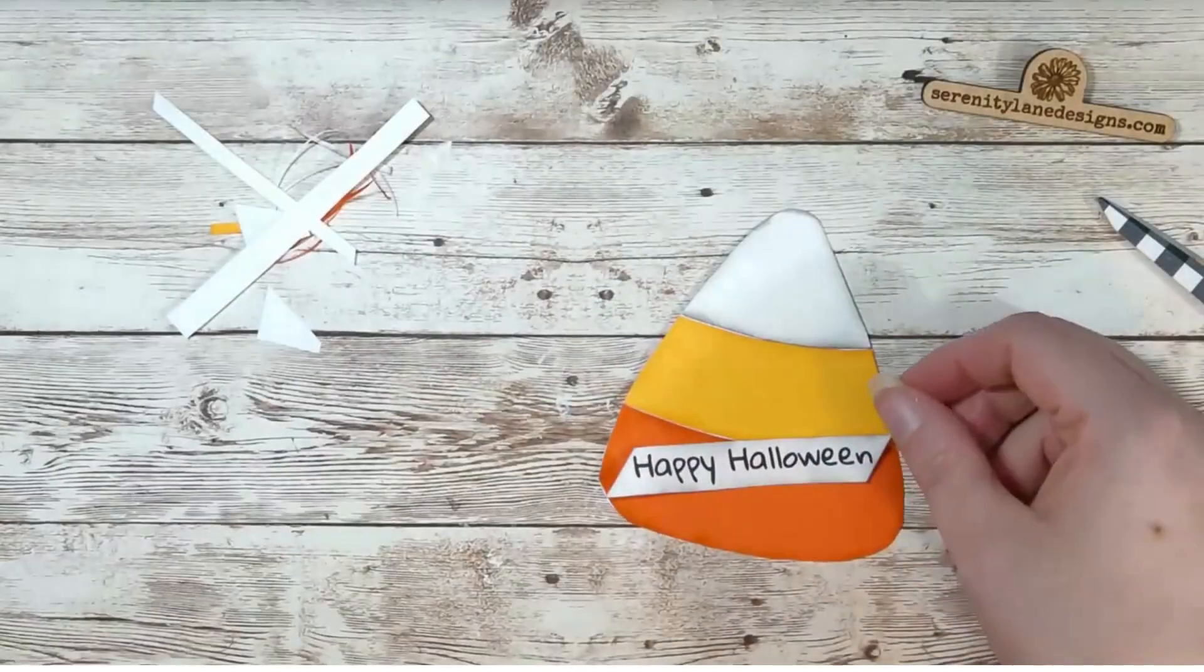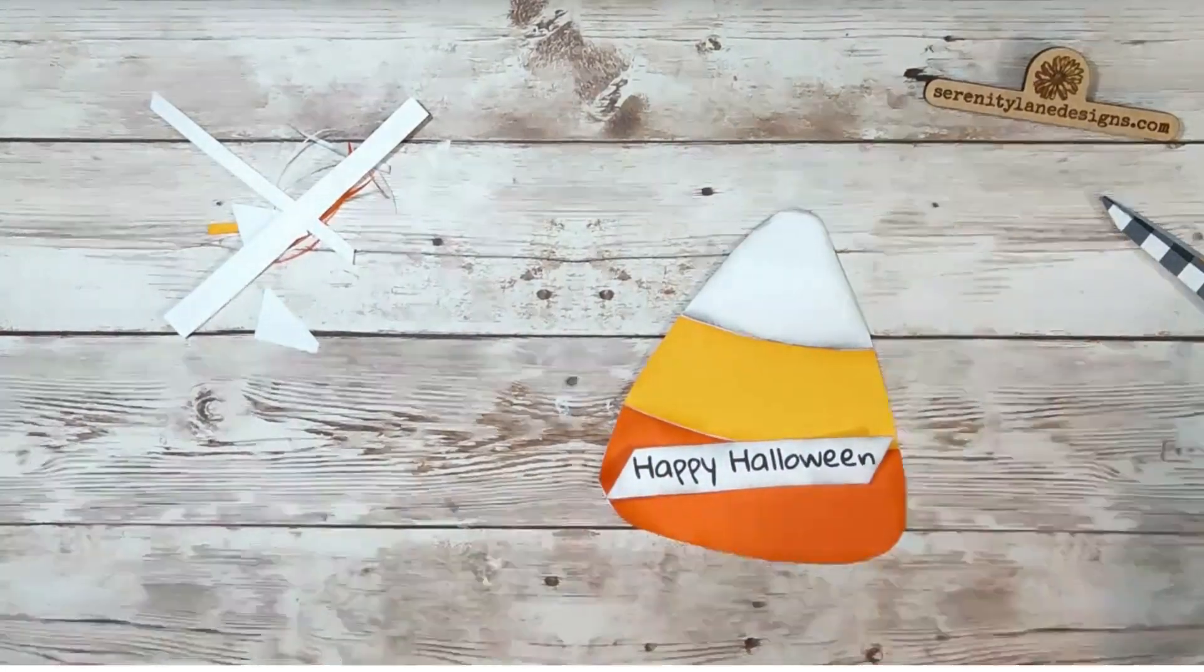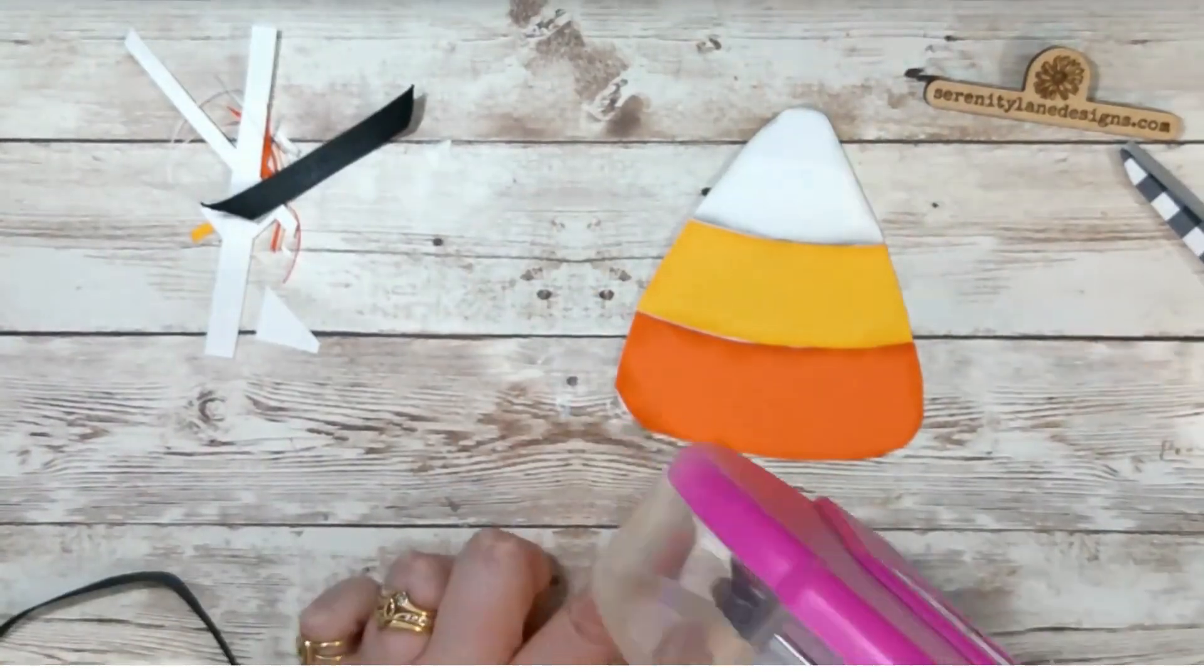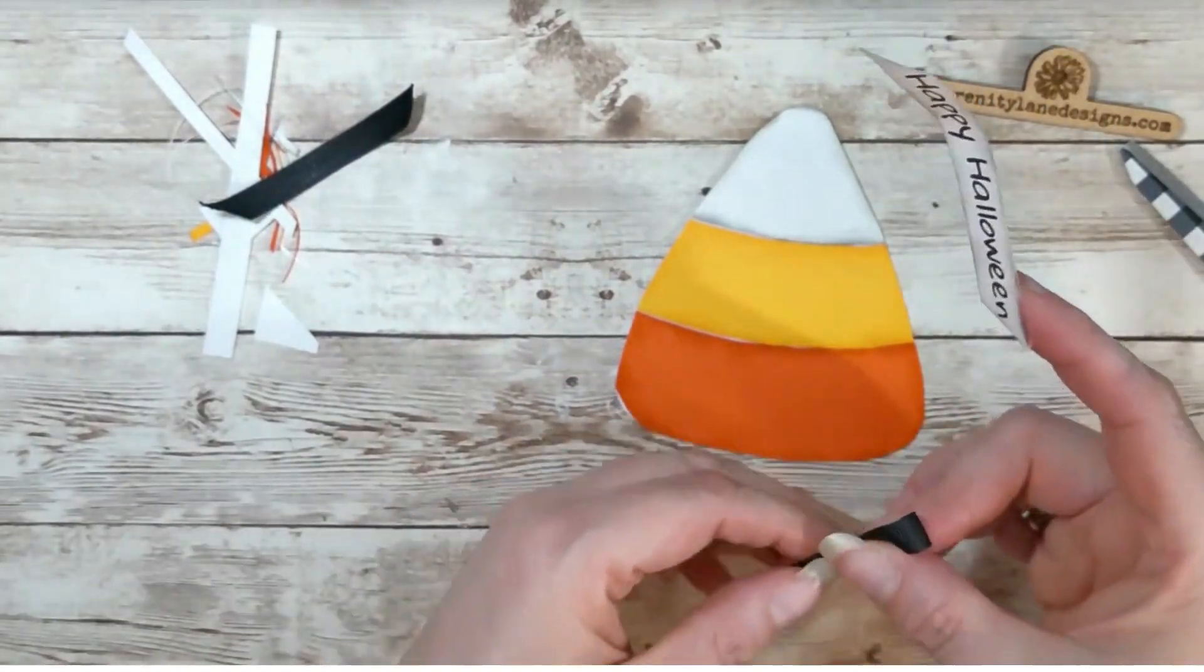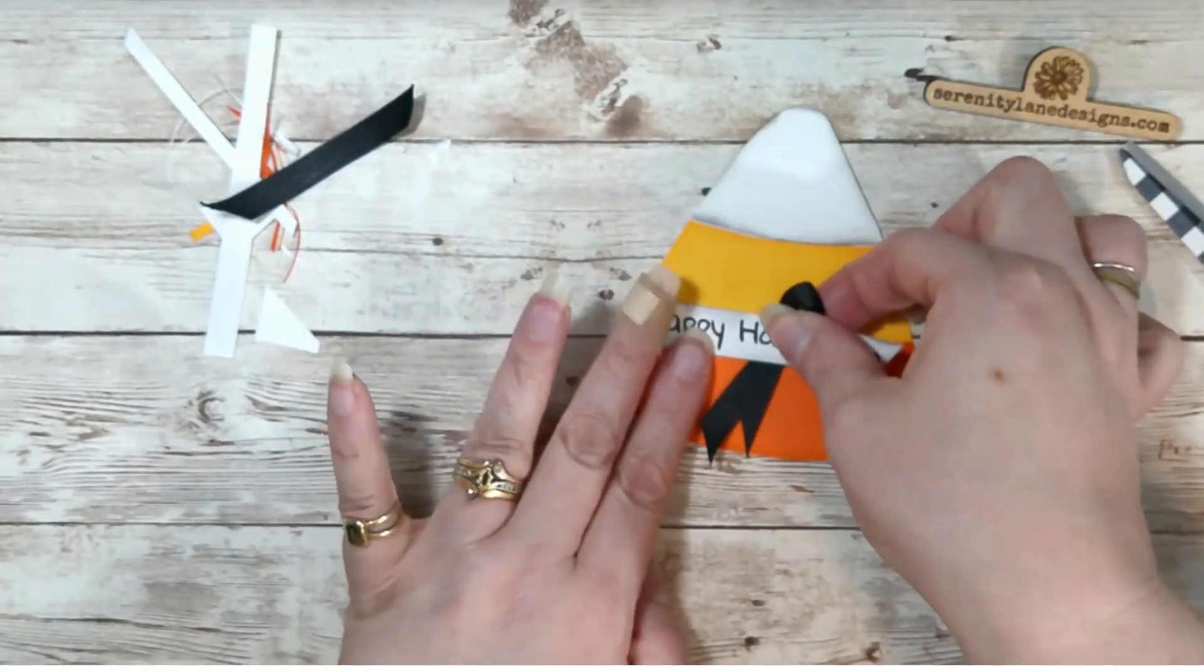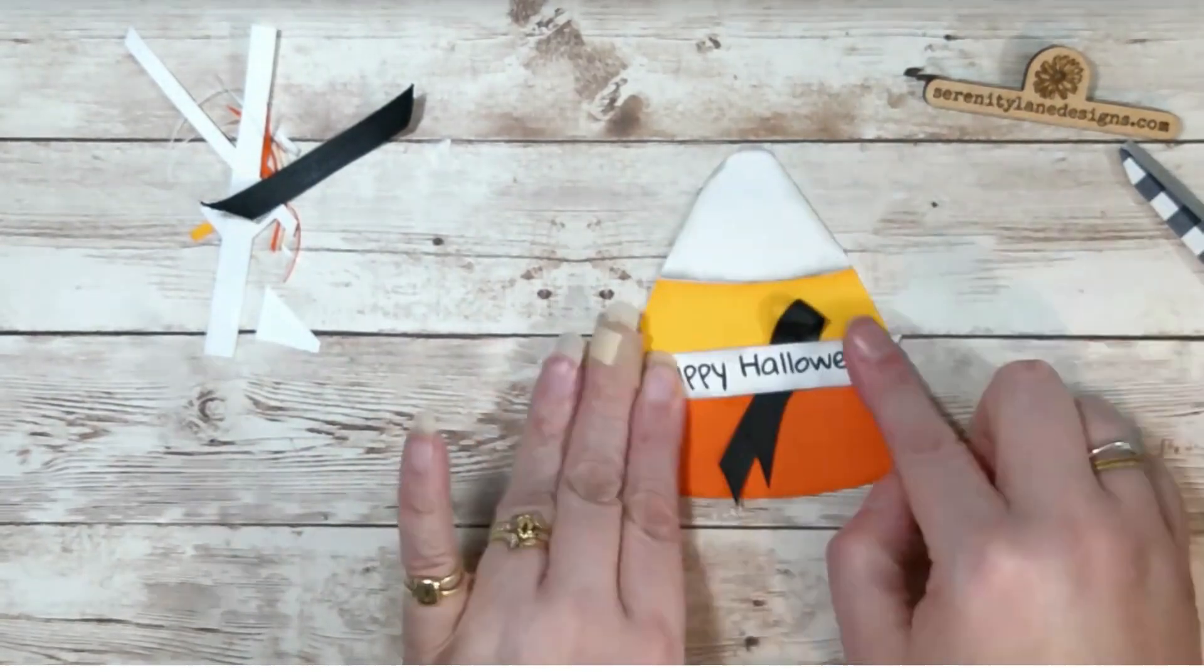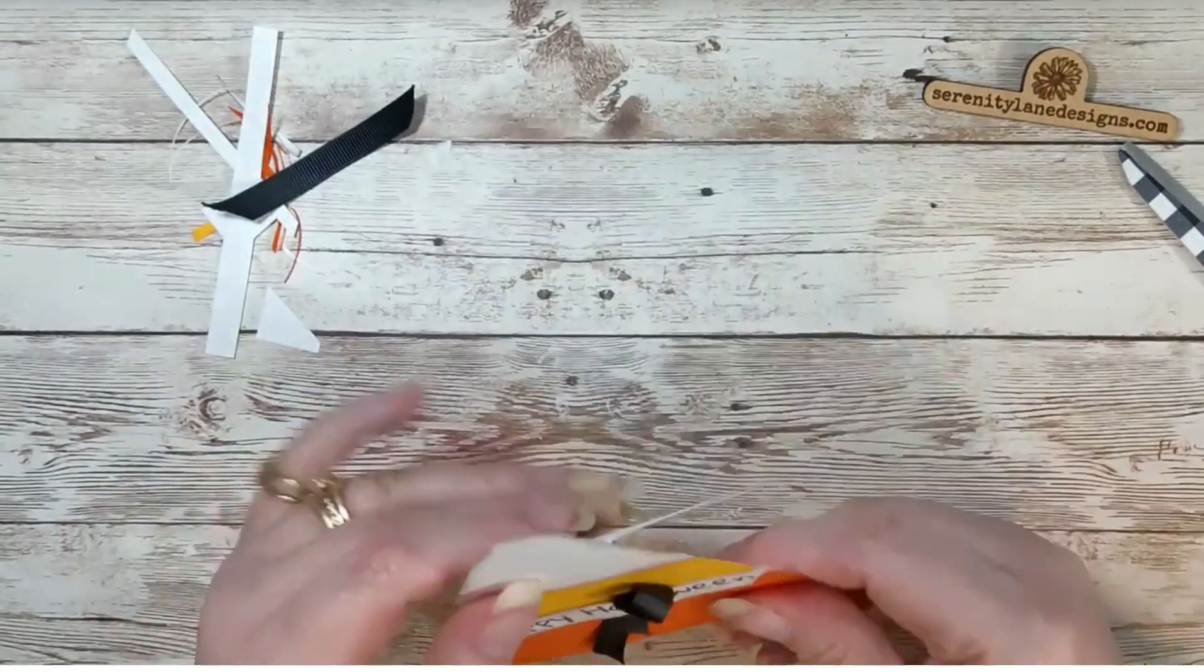Then I decided I wanted to be a little bit different, so I took a little piece of ribbon and I just attached that to the back of the words. There you go. Cute Halloween candy corn card.